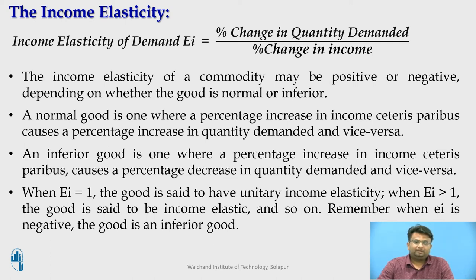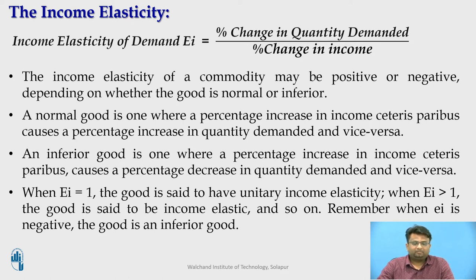The income elasticity of a commodity may be positive or negative depending on whether the good is normal or inferior. A normal good is one where a percentage increase in income causes a percentage increase in quantity demanded, so for normal goods the income elasticity of demand will be positive. The income elasticity of demand provides a numerical measurement of these differences. Whereas an inferior good is one where a percentage increase in income causes a percentage decrease in quantity demanded. Examples of inferior goods include artificial jewellery and imitation shoes. For inferior goods, income and quantity demanded vary inversely, so income elasticity will be negative.